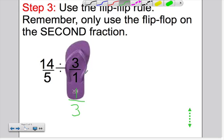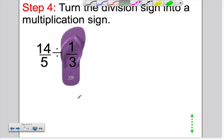So all I did is I flip-flopped these two numbers. Instead of 3 over 1, I now have 1 over 3. Step number 4. Turn the division sign into a multiplication sign.